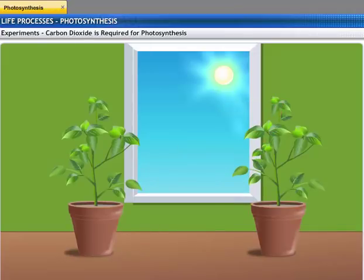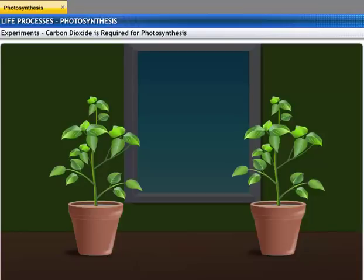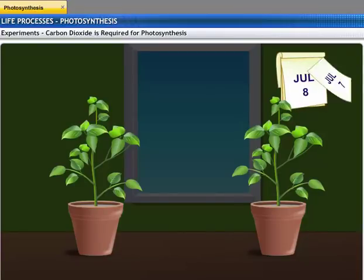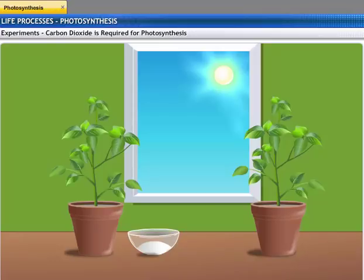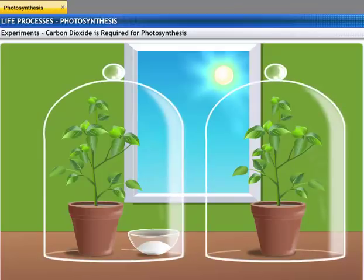Let's carry out an experiment to prove that carbon dioxide is vital for photosynthesis. Take two healthy potted plants of the same size and keep them in a dark room for three days. Now place a watch glass containing potassium hydroxide beside one of the potted plants — potassium hydroxide is used to absorb carbon dioxide. Next, cover both the plants with separate bell jars. Seal the bottom of the bell jars to the glass surface so that the setup is airtight. Keep the plants in sunlight for about two hours.